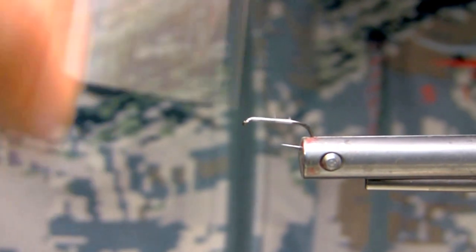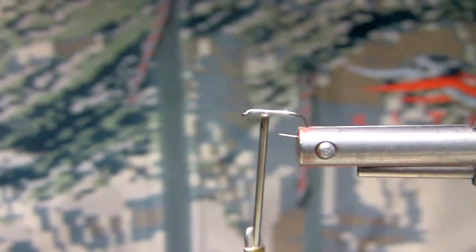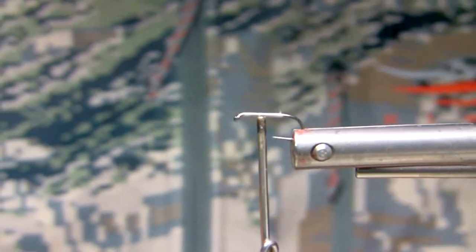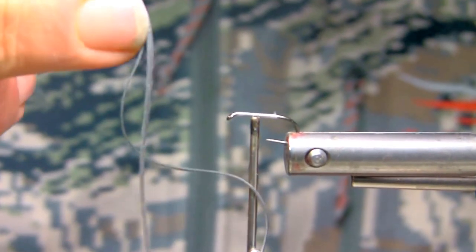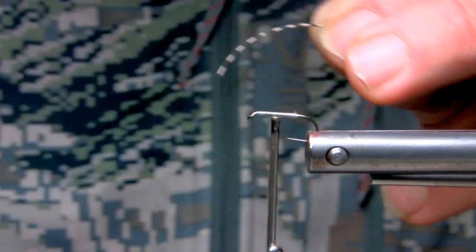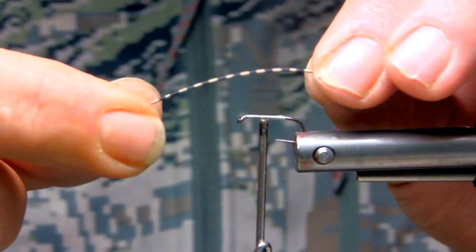We'll come back up the hook shank two-thirds of the way up the body and lay in our rubber legs first. Originally we were tying with the small black rubber square hackle membrane material that came out back in the 70s, late 70s, early 80s. Then the centipede legs came out and they're variegated or barred.